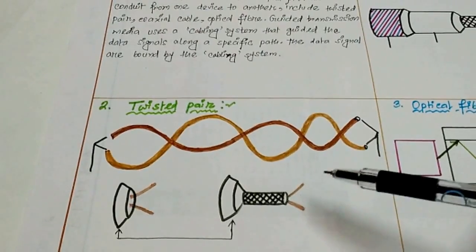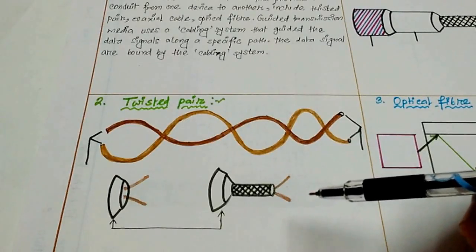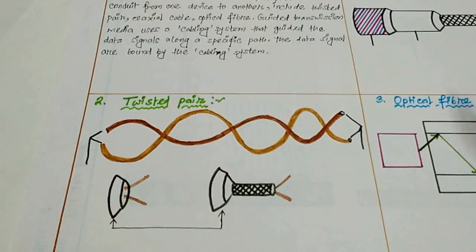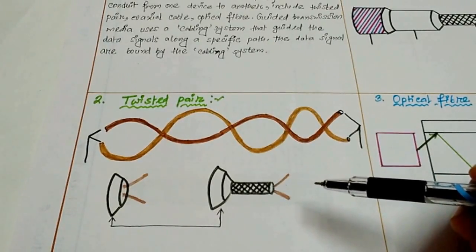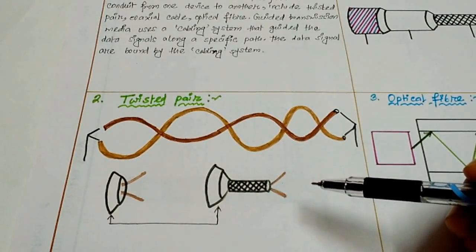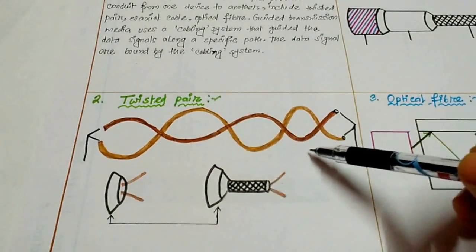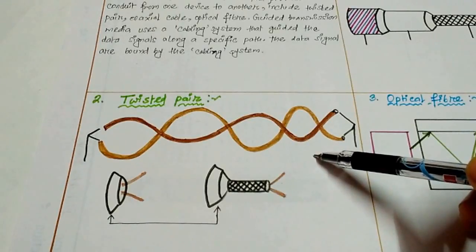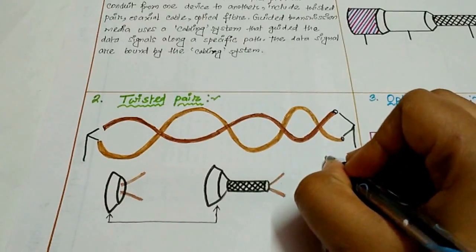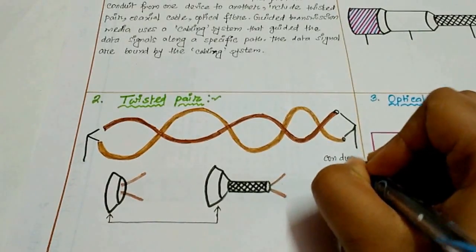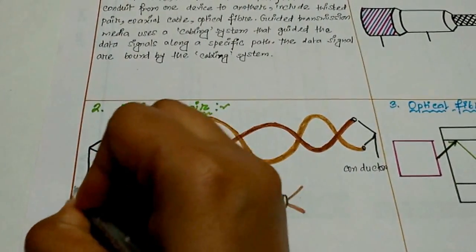Here I mentioned there are three types of guided media. Now first, what is twisted pair? Twisted pair cable uses metallic copper conductors that accept and transport signals in the form of electric current. A twisted pair consists of two conductors, each with its own plastic insulation. This is the diagram. It is our conductor and this is our insulator.